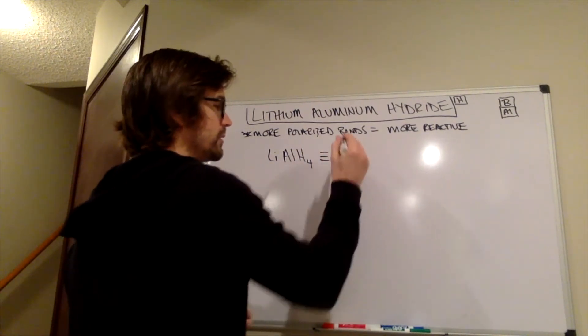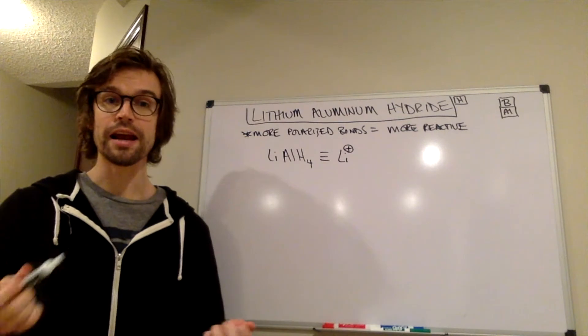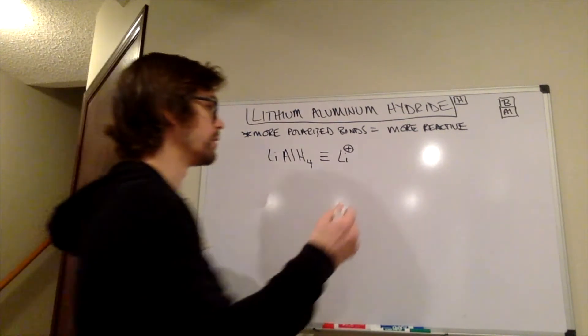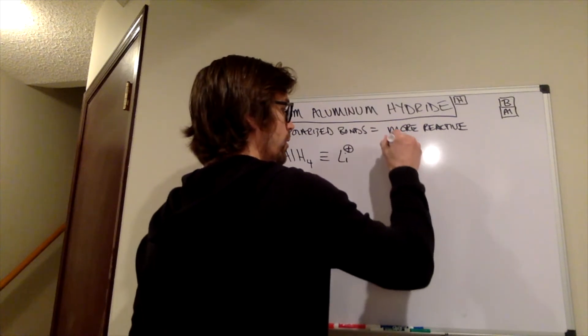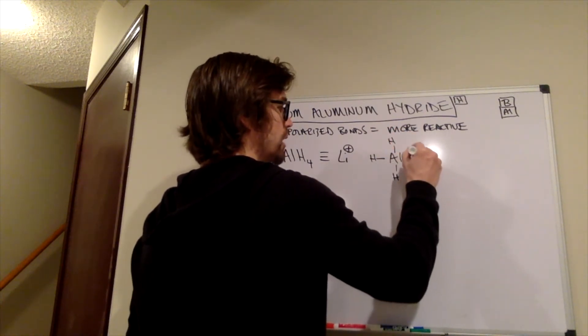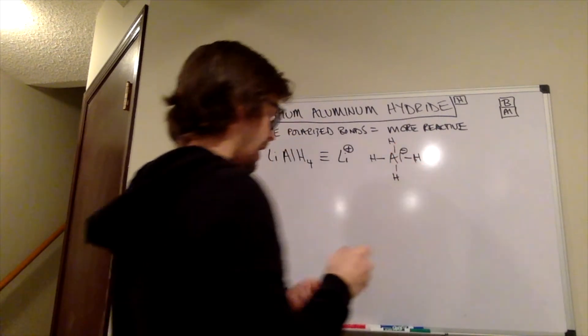And how is this going to compare to sodium borohydride? Well, we have again lithium plus, that's a cation. And then what about the rest of it? Well, again, we have Al with four H's around it, we had boron with four H's around it, negative charge on Al.